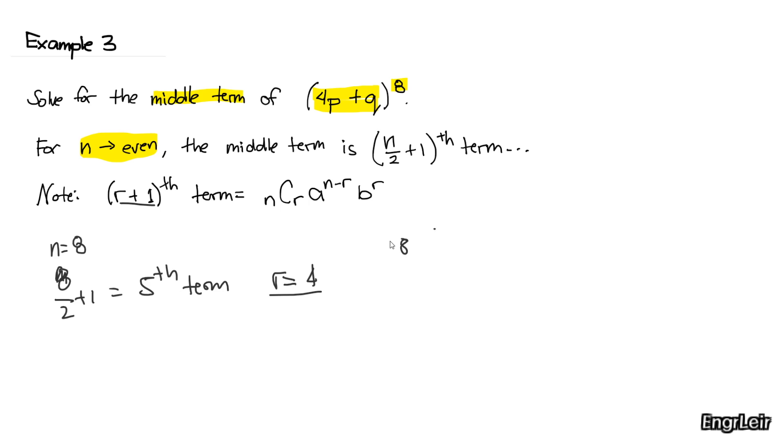We have 8 combination 4, a which is 4P raised to 8 minus 4, d which is Q raised to 4.